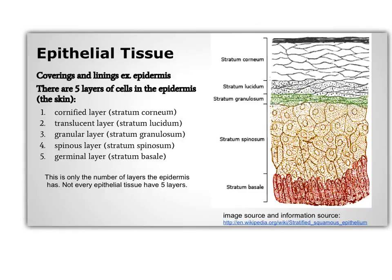Epithelial tissue covers the entire surface of the body. It is made from cells that are closely packed together and arranged in one or more layers. The tissue forms the covering and lining for the inside and outside surfaces of the body. Epithelial tissue can be classified by the number of layers it has. If it is one-cell thick, it is called simple epithelium. If it is more than one-cell thick, it is called stratified epithelium.